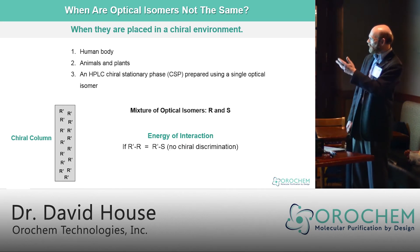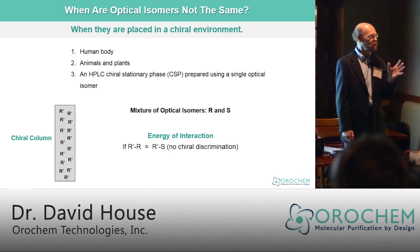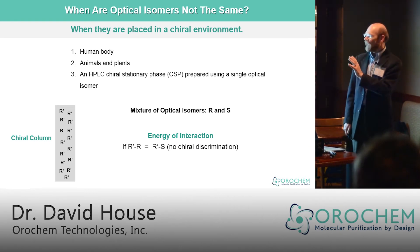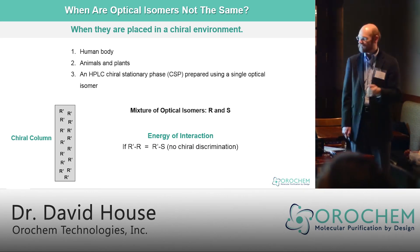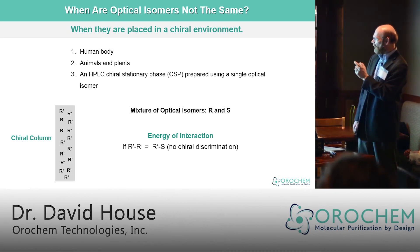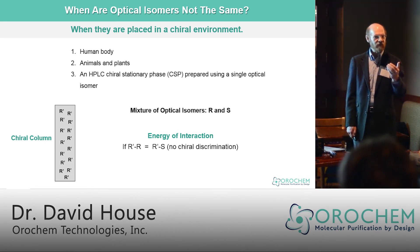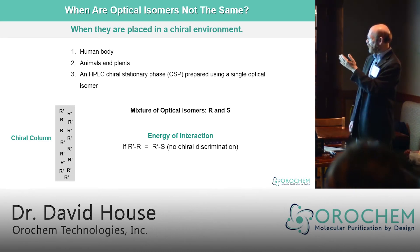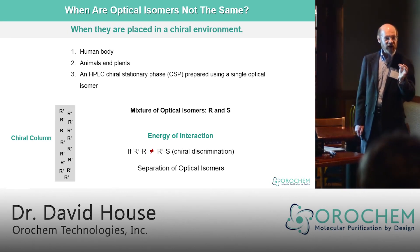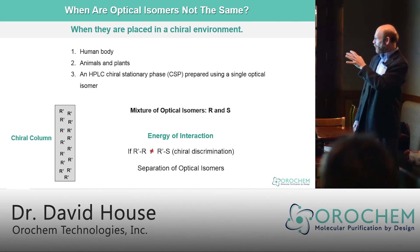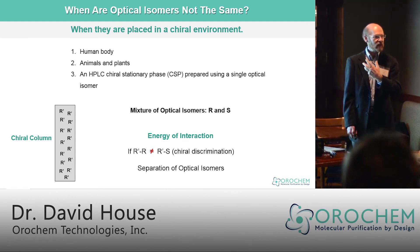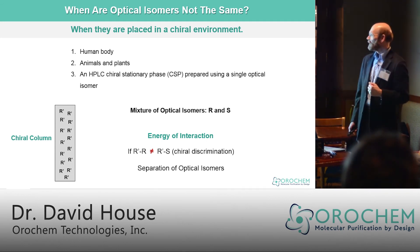If we look in the lower left, we see a depiction of a chiral column that only has the R isomer in it. If we take a mixture of optical isomers R and S, place it on the top of the column and elute it, and look at the energy of interaction: if the R-R interaction is equal to the R-S interaction, then we have no chiral discrimination. However, if the R-R interaction is different than the R-S interaction, then we can see chiral discrimination. This is the type of interaction we'll be looking at with the molecular modeling when Ben U gives that part of the presentation.